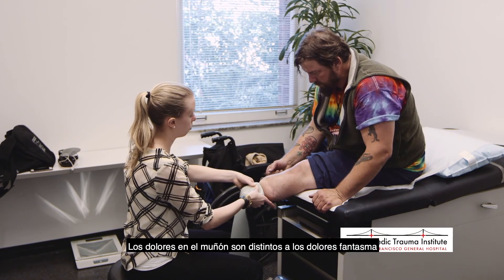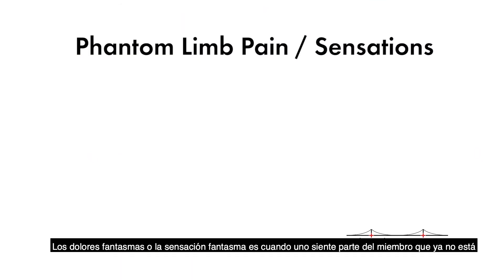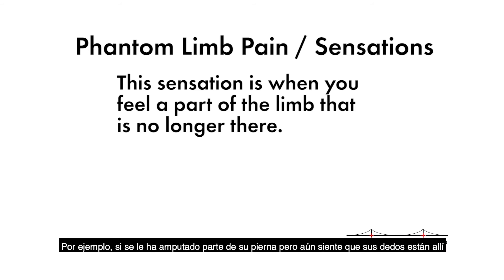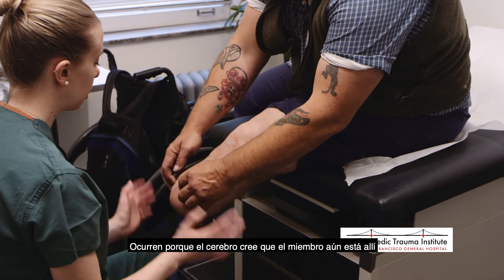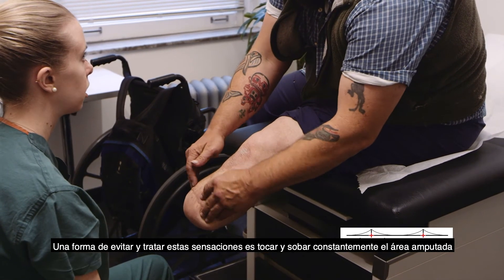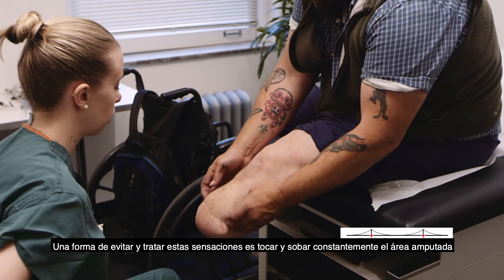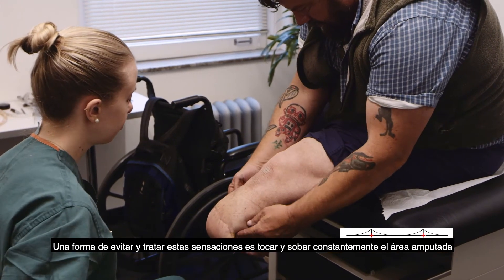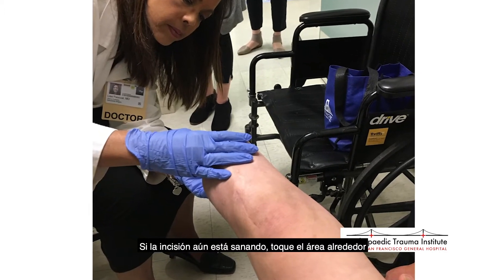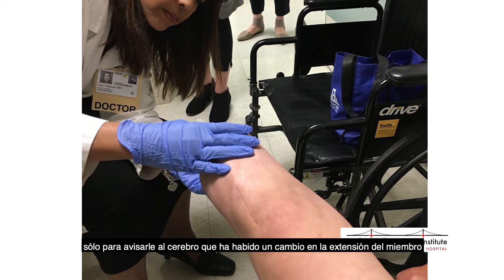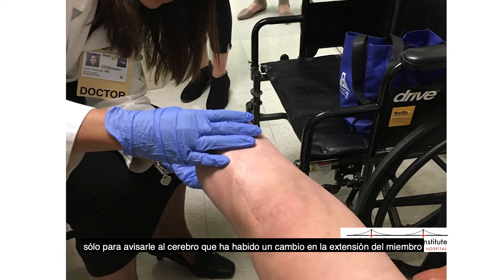Residual limb pain is different from phantom limb pain or phantom limb sensation. Phantom limb sensation is when you feel a part of the limb that is no longer there. For example, if you've had an amputation to part of your leg, you might feel that your toe is still there. Phantom sensations are very common and are due to the brain thinking that the limb is still there. Therefore, one of the best ways to prevent and treat these phantom sensations is to constantly touch and massage the amputation area. If your incision site is still healing, you can work around that area just to give your brain feedback that there has been a change in where your limb ends.